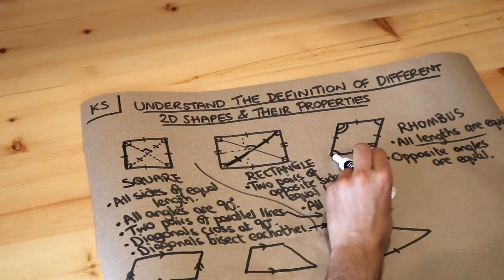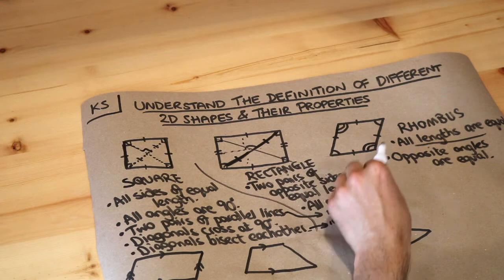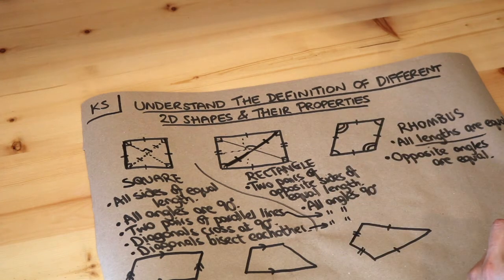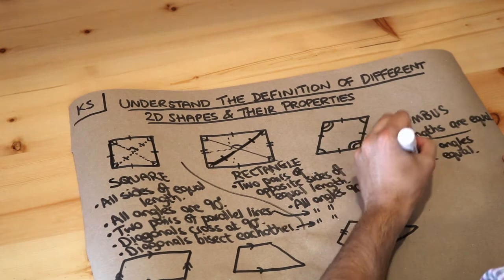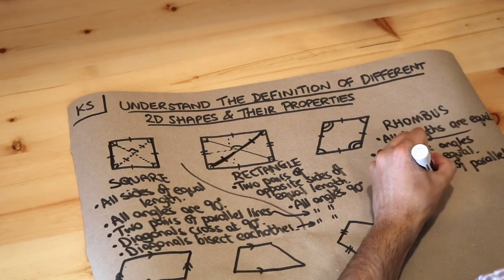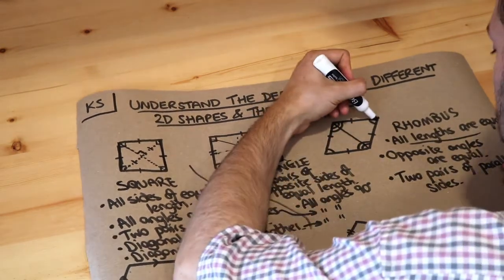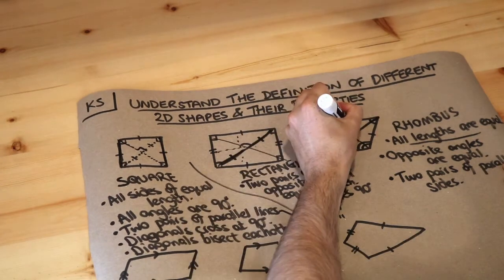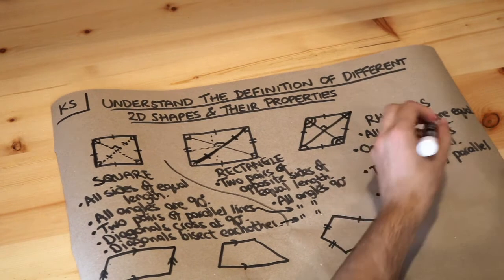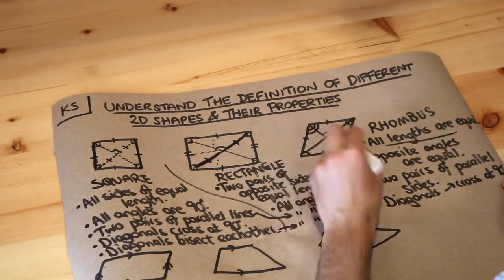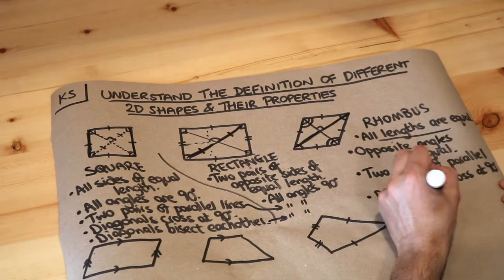The rhombus also has parallel sides: the top edge and the bottom edge are in the same direction, and the left edge is in the same direction as the right edge — so it has two pairs of parallel sides. If we draw the diagonals, they cross at right angles — 90 degrees. And because this length is equal to this length, the diagonals also bisect each other.